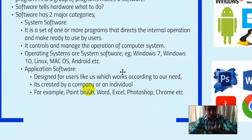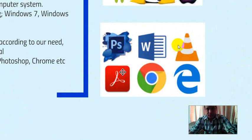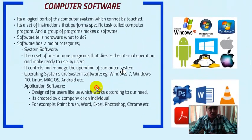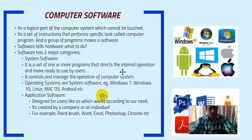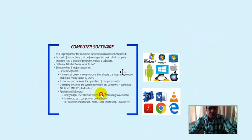Application software are those software which the user uses. Examples include Photoshop, Microsoft Office, VLC Player, PDF Reader, Chrome, and Internet Explorer. Application software is designed for users and works according to our needs. It is created by a company or individual — if you know how to create software, you can create it yourself. Examples include Paint, Word, Excel, Photoshop, and Chrome.